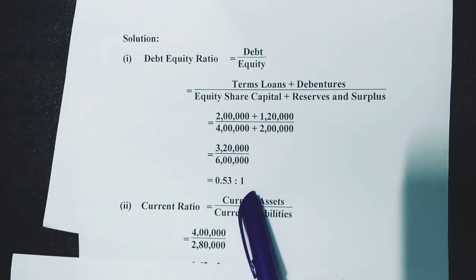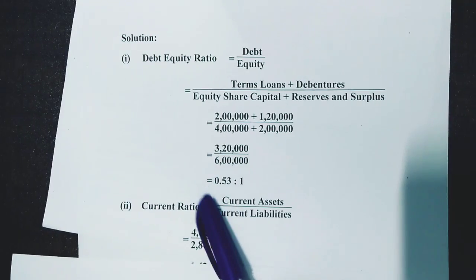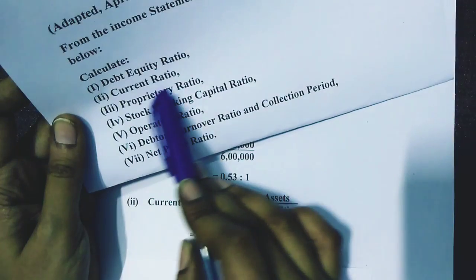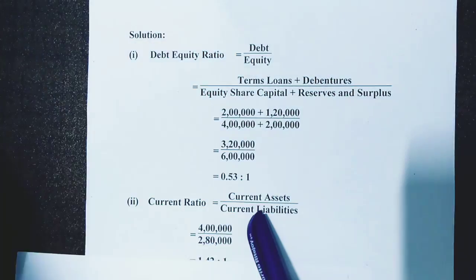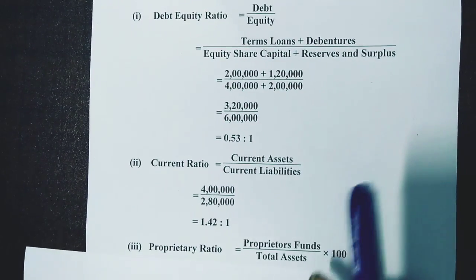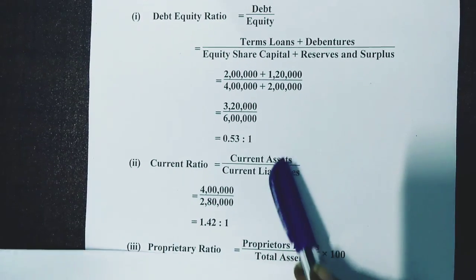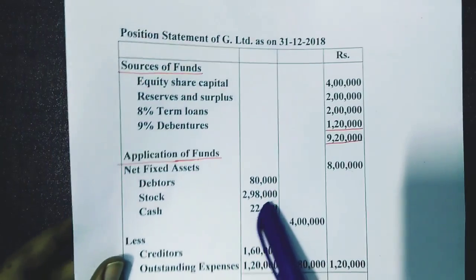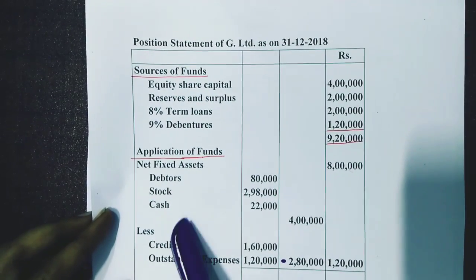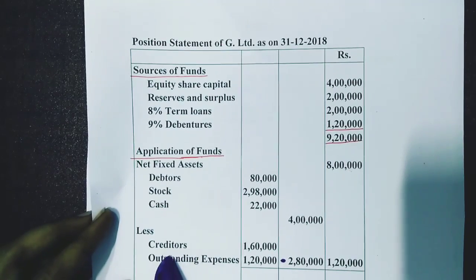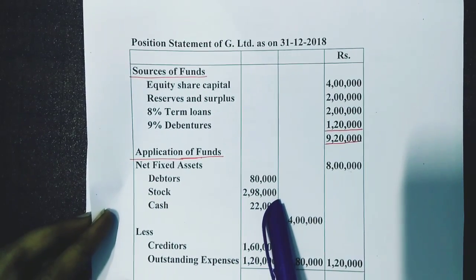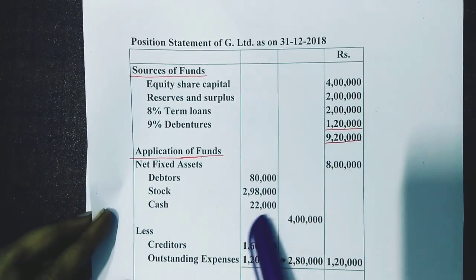The next one is the current ratio. The formula is current assets divided by current liabilities. As discussed in the previous session, these amounts come from your position statement or balance sheet, and you have to search them at the end of the balance sheet. Debtors is rupees 80,000, stock is rupees 2 lakh 98,000, and cash is rupees 22,000.